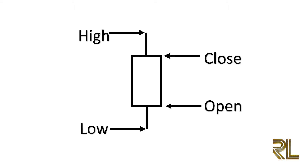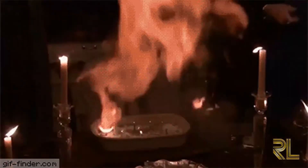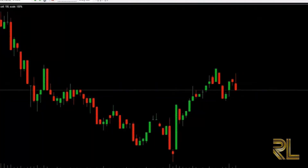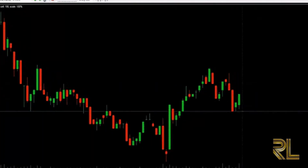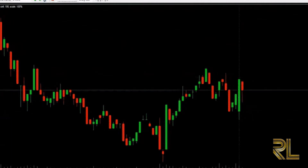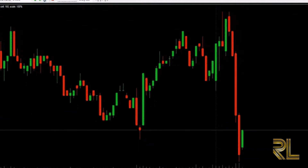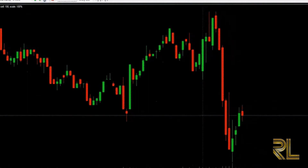If the closing price is higher than the opening price, then the block in the middle will be white, hollow, or unfilled. This is not a rule that it needs to be black and white — generally a lot of traders change the colors to suit their desired look. But the color doesn't really matter; it's the information that the candlestick provides that matters. For this video we will use the traditional black and white.